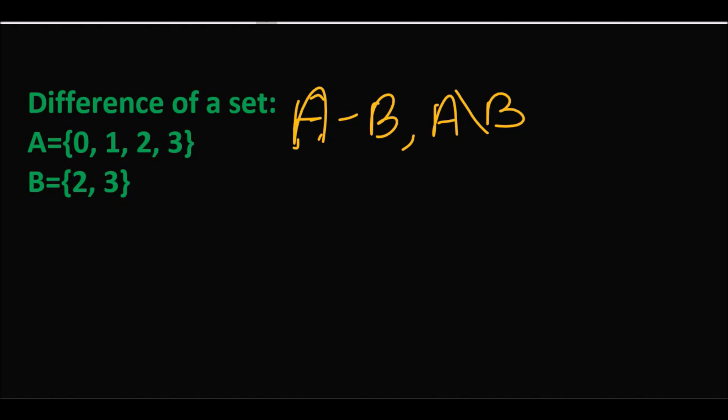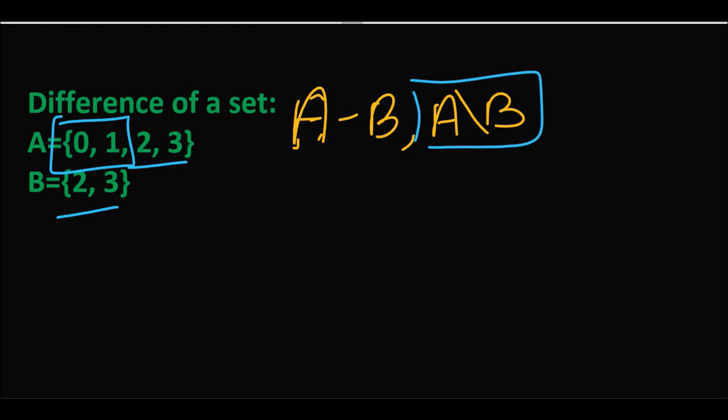Difference of the set میں ہم کرتے یہ ہیں کہ ہمارے پاس جو set A ہوتا ہے اس کے اندر سے set B کو نکالنا ہوتا ہے، اور جو remaining elements ہوتے ہیں وہ difference of the set میں آ جاتے ہیں۔ آپ کی book میں A\B کا symbol بھی use ہوتا ہے اور A minus B کا بھی — دونوں آپ کے mind میں ہونے چاہئیں، دونوں way میں پوچھے اور لکھے جا سکتے ہیں۔